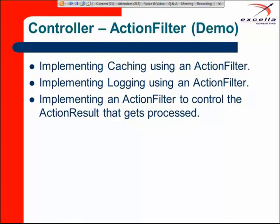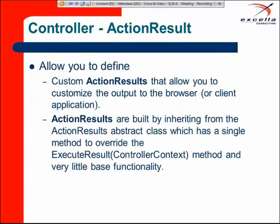Action results determine what gets done with the information provided from the controller's action method. The most common one is the view result, which has an ExecuteResult method that associates the controller's information to a view and renders it to a browser. But we could be building an application where the request is for data — XML or JSON format — and it needs to be formatted somehow.